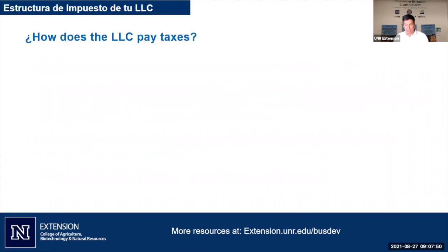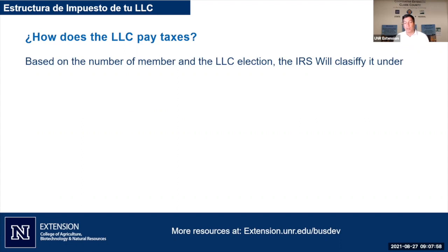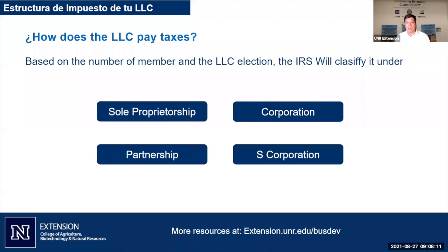So how does an LLC pay taxes? The IRS looks at the number of members and the election of the LLC, placing it in one of four categories: sole proprietorship, corporation, partnership, or S-corporation. These are the four most common choices. Saying 'I pay taxes as an LLC' is an incomplete statement — an LLC must fall under one of these tax structures. The IRS doesn't recognize a standalone LLC tax structure.